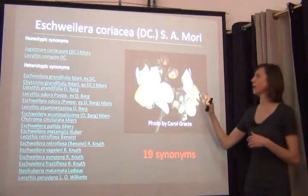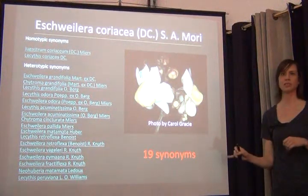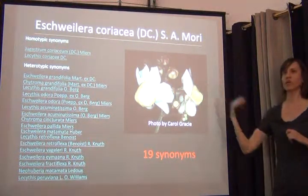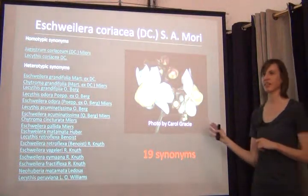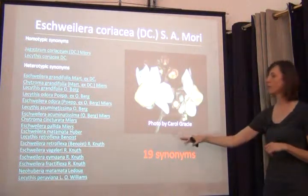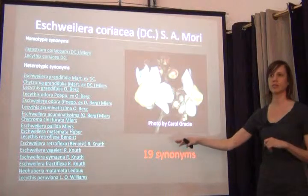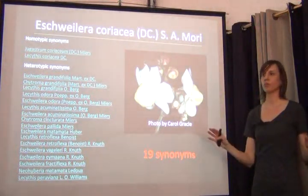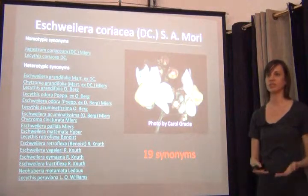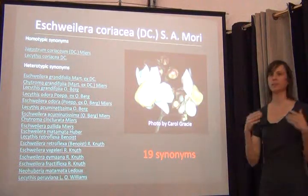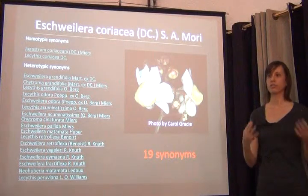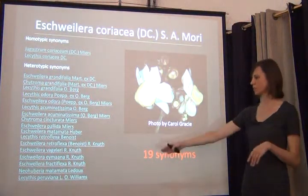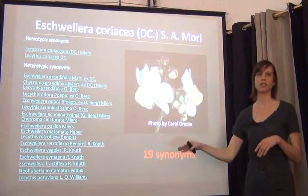For example, Schweillera Coriaceae has 19 synonyms. We have a specialist in Lecythidaceae who makes sure all synonyms are filed under Schweillera Coriaceae. But if you have a specimen with Lysithis peruviana on it filed under that name, and others filed under Schweillera Coriaceae, your users aren't going to know to look in both locations. They'll ask, why isn't Lysithis peruviana in the lookup list for the collection?